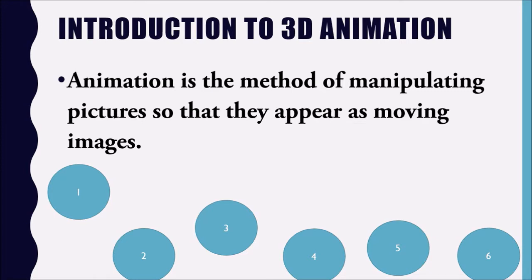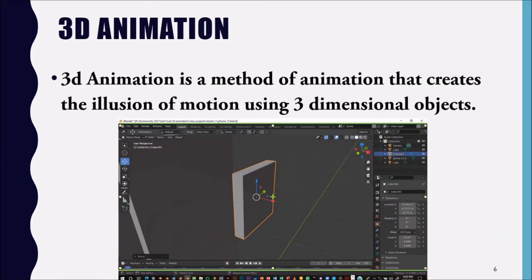Animation is a method of manipulating pictures so that they appear as moving images. It's not really like objects are actually being moved — we have several pictures that are played in sequence, and you see them moving, or you see the illusion of movement. Now, what is 3D animation?